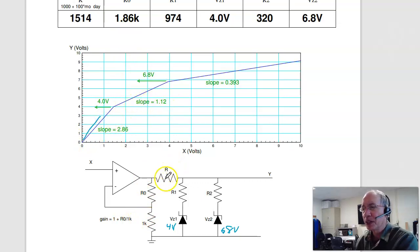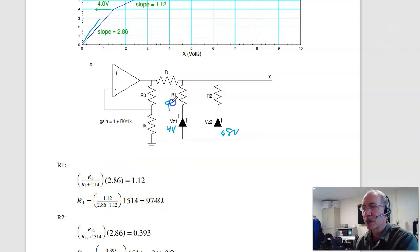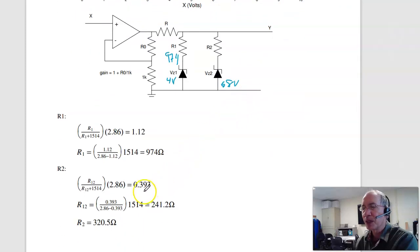The slope drops down to 1.12. That's my voltage divider. When this diode turns on, I get a gain of R1 over R1 plus R, R1 plus R, times 2.86. It's got to give me 1.12. Solve for R1, I get 974 ohms. Then the last part, slope is 0.393. The resistor is in parallel, by voltage division, times the op-amp. Gives a gain of 0.393. R12 is 241 ohms. That's R1 in parallel with R2. I know R1. Solve for R2, makes R2 320 ohms. That's your clipper circuit.